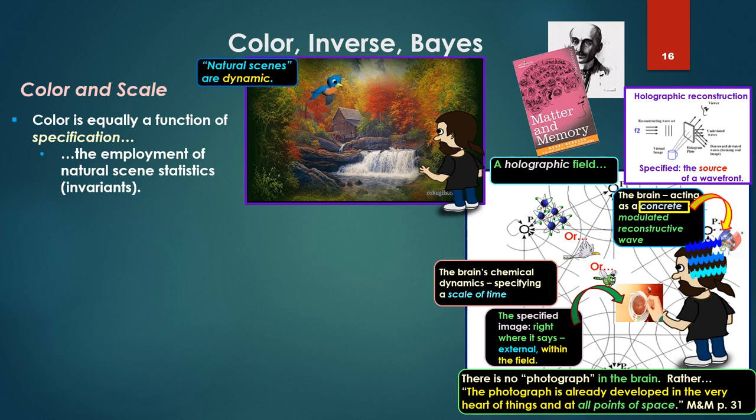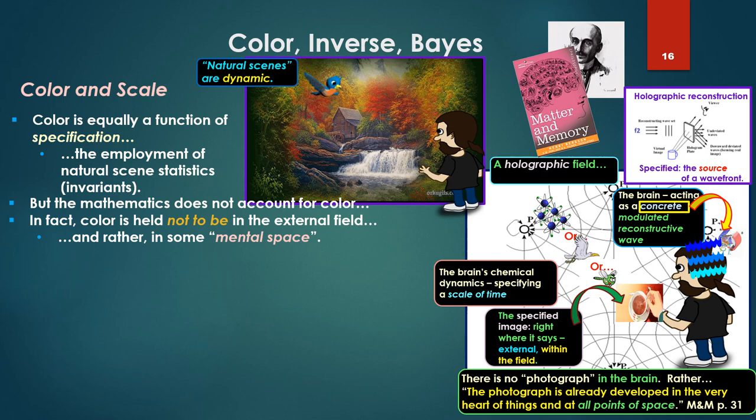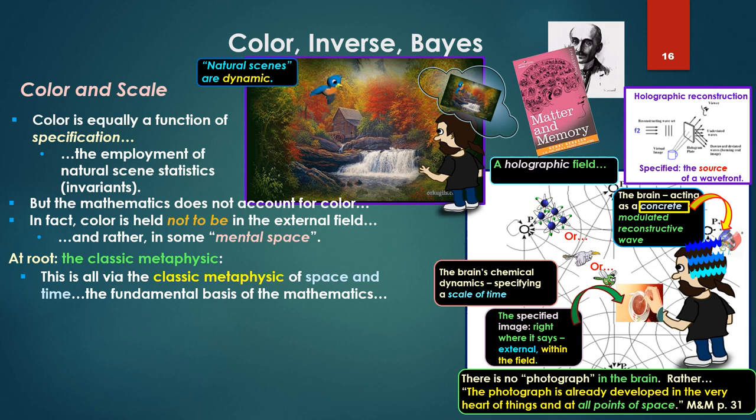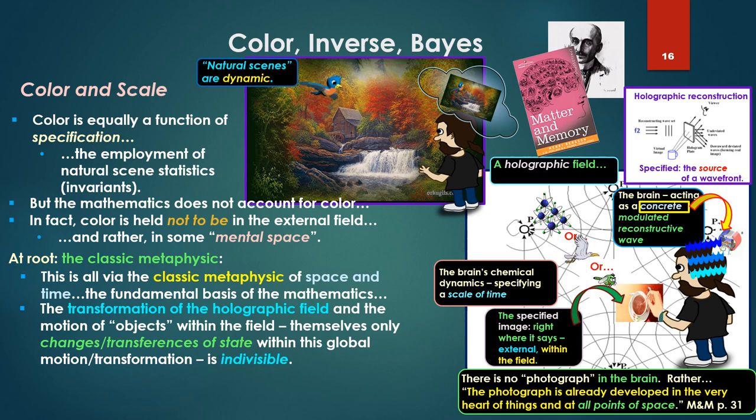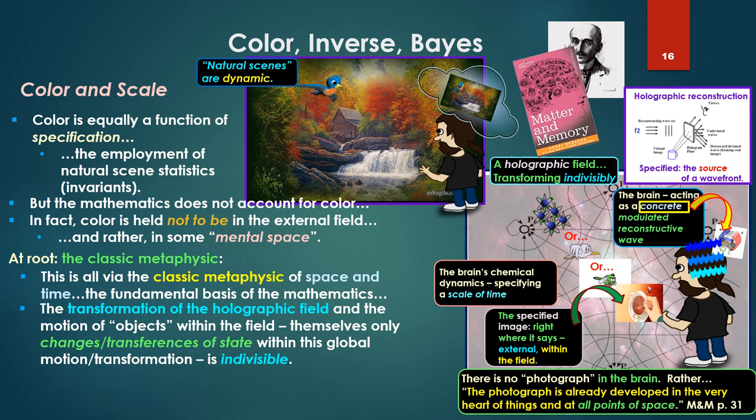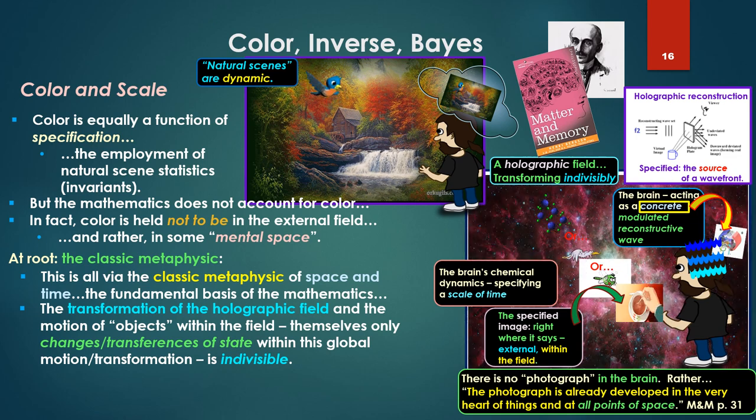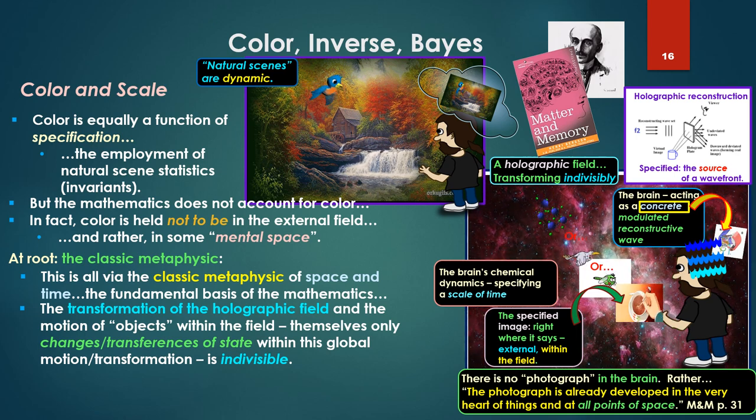And scale takes the problem of qualia to include color beyond Bayes or statistics or neural nets. Color is equally a function of specification, an optimal specification, the employment of again natural scene statistics or invariance. But mathematics does not account for color. In fact, color is held to not be in the external field. We started this whole thing with, and rather in some mental space, some strange undefinable mental space or perceptual space. At the root of this is the classic metaphysics. This is all via the classic metaphysics of space and time, the fundamental basis of the mathematics in the first place. The transformation of the holographic field and the motion of objects within the field, which are themselves only changes or transfers as a state within this global motion or transformation. This transformation is indivisible.